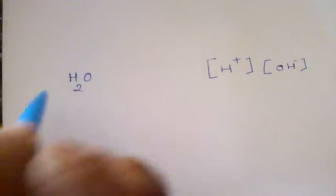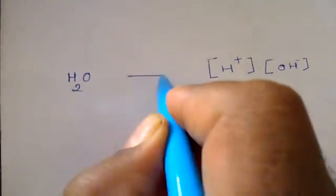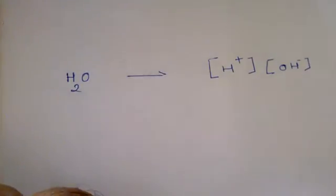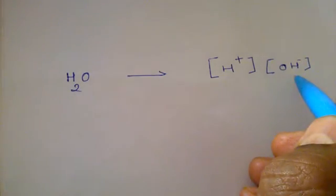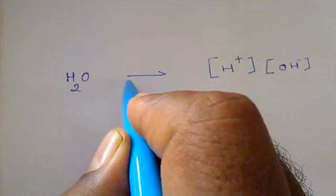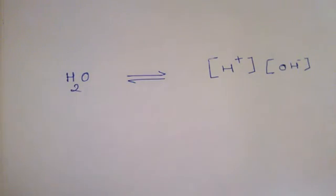Now why is it called ionic product of water? When water dissociates, it dissociates into H+ and OH-, and the reaction is reversible.